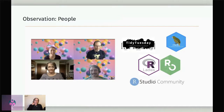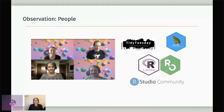My biggest observation around the growth of R in the BC public service is that it is really all about the people. People are doing the learning and are at the heart of the community. Finding and contributing to, or building, safe accessible communities has been one of the most important aspects of the growth of R in the public service and beyond. Here are just a few logos from other communities doing a tremendous amount for supporting people learning R and data science.